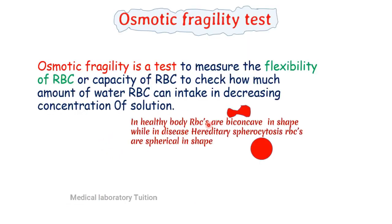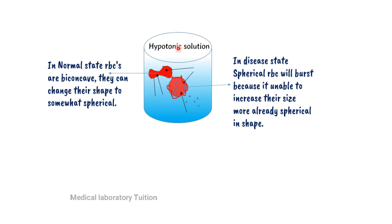In a healthy body, RBCs are biconcave. In the disease state of hereditary spherocytosis, RBCs are spherical in shape. If we put both types of RBCs in a hypotonic solution, water will move from less concentration into the higher concentration through the semi-permeable membrane of the RBC. The spherical RBC will burst more quickly because it cannot change its size much. The normal biconcave RBC can change shape somewhat toward spherical, so it takes more time to lyse compared to the spherical RBC.